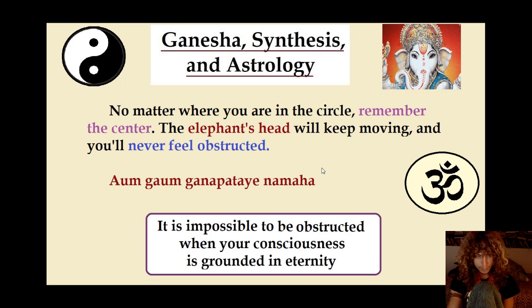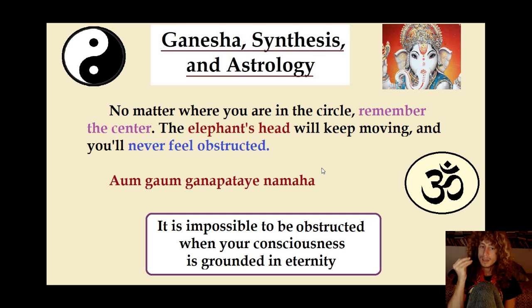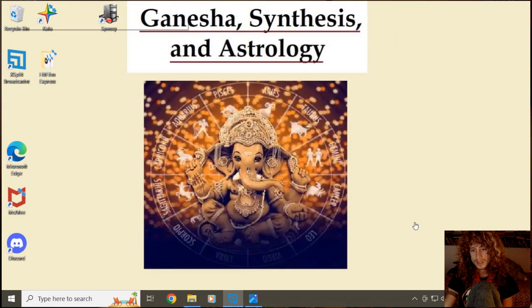Remember that no matter where you are in the circle, remember the center. The elephant's head will keep moving and you'll never feel obstructed — it's impossible to be obstructed when your consciousness is grounded in eternity. It's very important for everybody to understand. It's deep, but if astrology wasn't deep, it wouldn't be real. If astrology wasn't complex, it wouldn't accurately reflect the complexity of man. But when you look at the top of it, there are simple, basic truths. The figure of Ganesha as the lord of astrology and the word is a very important thing to understand in order to effectively, as a client, prepare the way so that an astrologer can do their work.